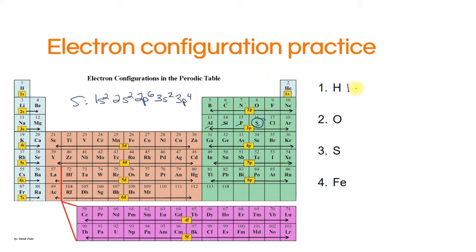Hydrogen is easy: it's 1s1 — the lowest energy level with only one electron. For oxygen, we start with 1s2 going through hydrogen and helium, then 2s2 with two boxes, and then 2p4 — one, two, three, four electrons in that category. Oxygen has a similar outer electron count to sulfur: two in the s and four in the p. That's because they're in the same group.